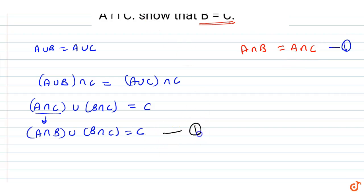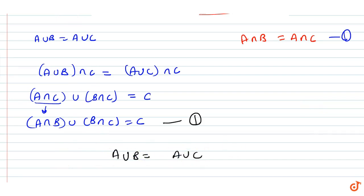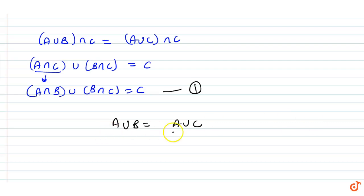I say let this be equation 1. Now, taking A union B equal to A union C, I have to intersect both sides with B.